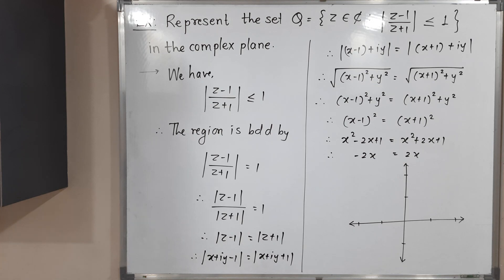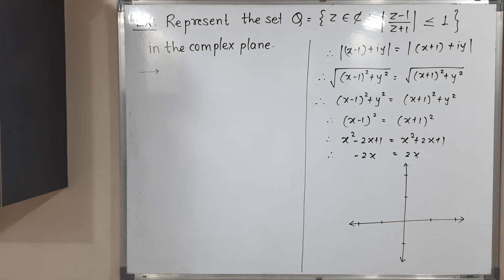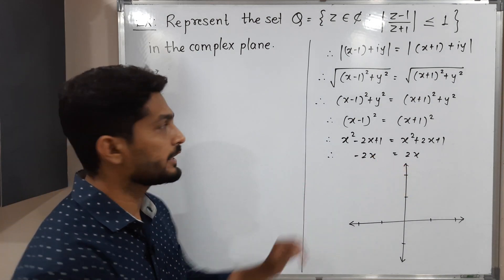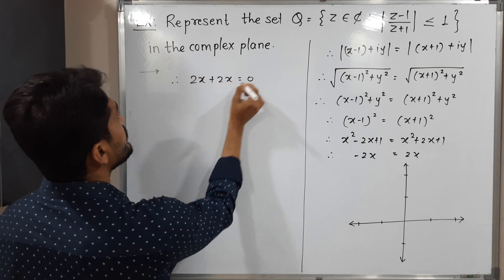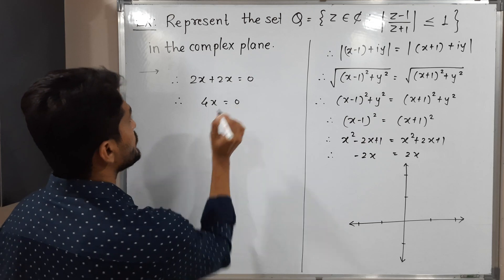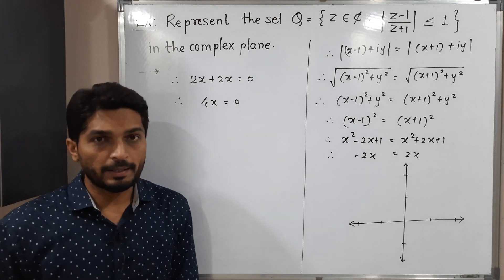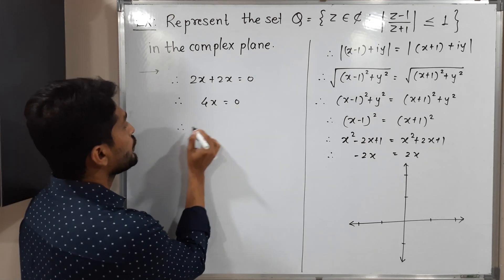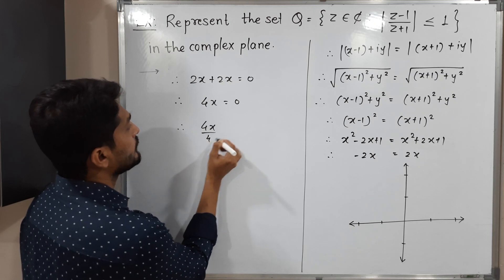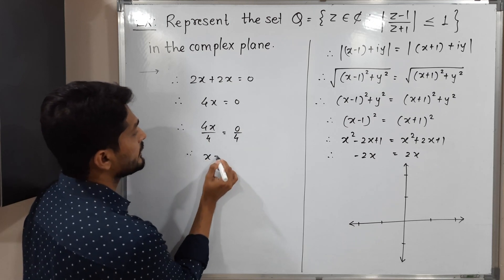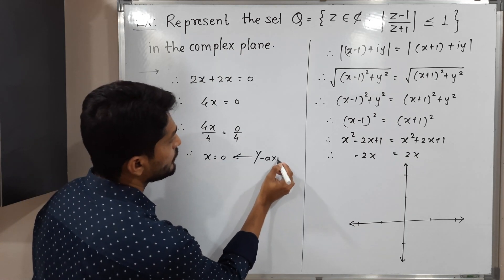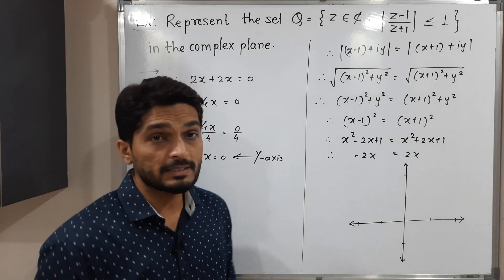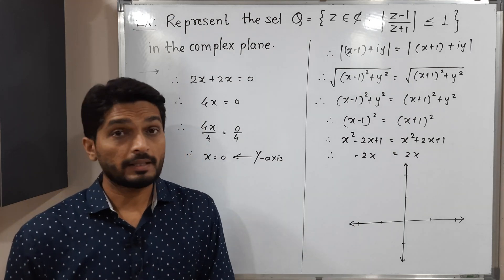The remaining part is minus 2X on the left and 2X on the right. Shifting minus 2X to the right gives 2X plus 2X equals 0, which is 4X equals 0. Dividing both sides by 4, we get X equals 0. This is the equation of the Y-axis, so the region is bounded by the Y-axis.